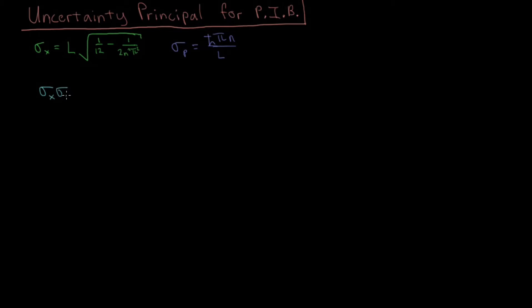So the product of the uncertainties, sigma x times sigma p, equals we have ℏπn. We get an L on the numerator from position, we get an L on the denominator from momentum, and then this whole radicand tags along.